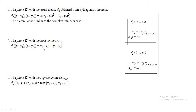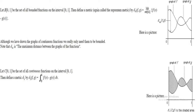In the plane R², the taxicab metric D1 is defined as D1((x1,y1),(x2,y2)) equal to |x1 minus x2| plus |y1 minus y2|. We can verify this is a metric. The supremum metric is defined as the maximum of |x1 minus x2| and |y1 minus y2|. This is also a metric and is called the supremum metric.